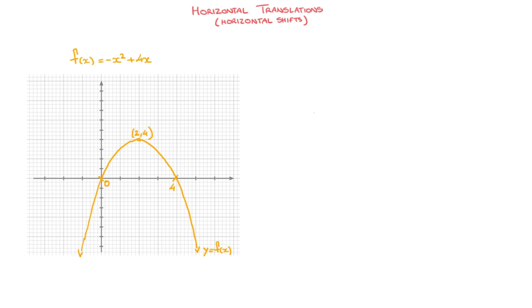In this video on transforming functions curves, we learn about horizontal translations, which are also known as horizontal shifts. Given a curve whose equation is y equals f of x — so that could be any curve — we can translate or shift this curve in the horizontal direction by defining the curve whose equation is y equals f of x minus c.